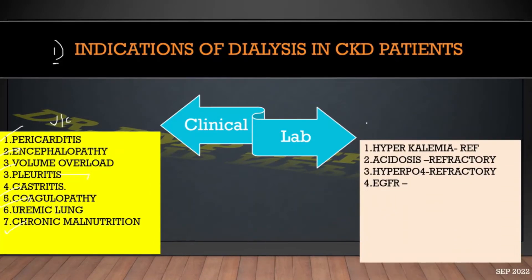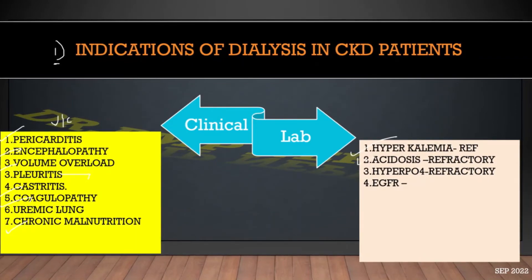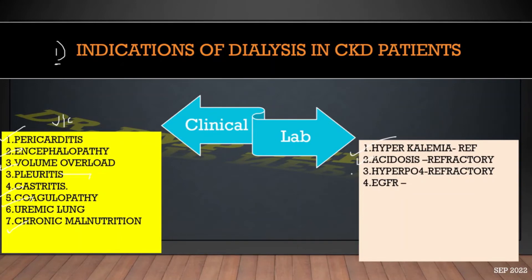Coming to the laboratory parameters: refractory hyperkalemia with potassium more than 6.5, acidosis with pH less than 7.1 or bicarbonate less than 5, and rarely refractory hyperphosphatemia. These usually won't occur unless the patient's eGFR is less than 15.